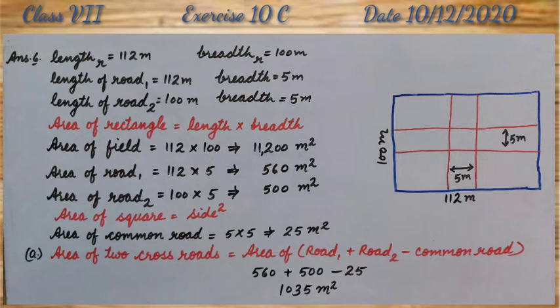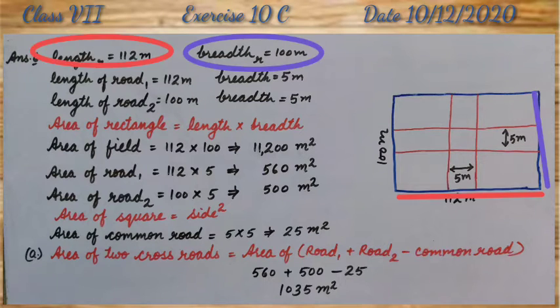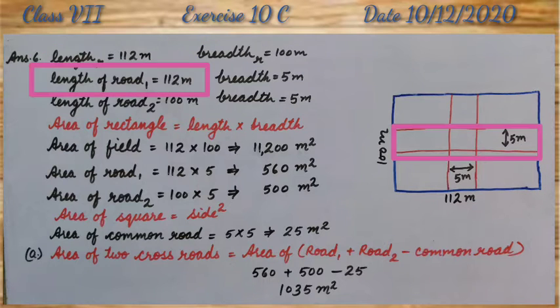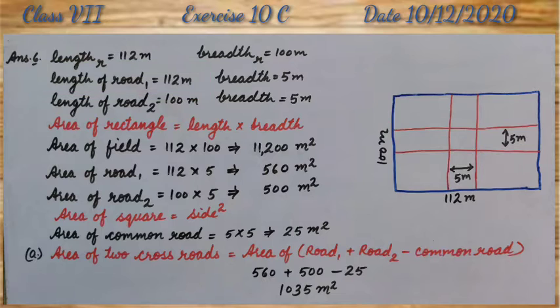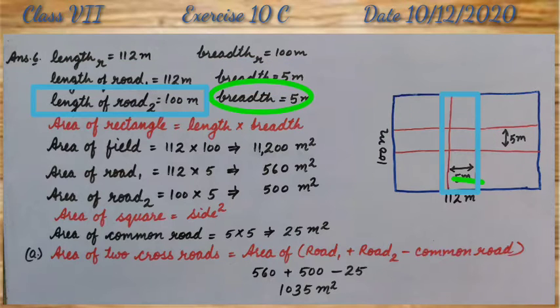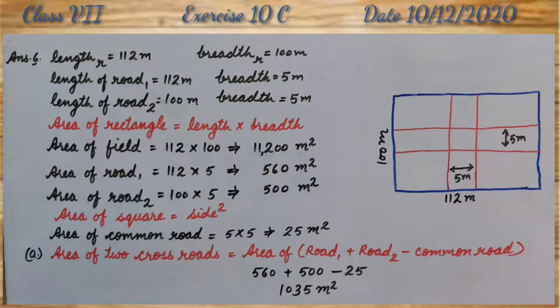Length and breadth of rectangular field are 112 meter and 100 meter. Therefore, length of first road is 112 meter, breadth 5 meter. Length of second road is 100 meter and breadth is 5 meter.